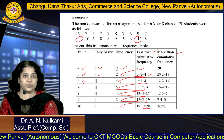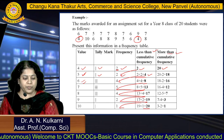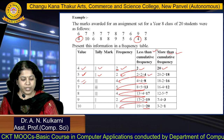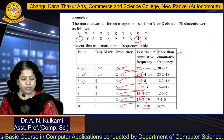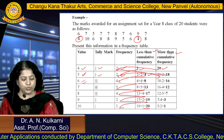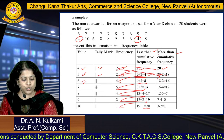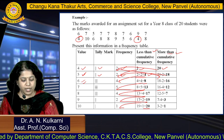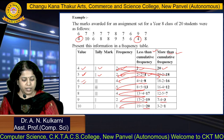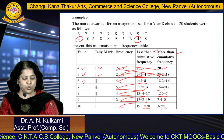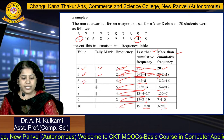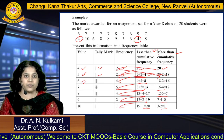For more than cumulative frequency, start by writing the total frequency of 20 for the first data item, then subtract successively from highest to lowest: 20 − 2 = 18; 18 − 2 = 16; 16 − 4 = 12; 12 − 5 = 7; 7 − 4 = 3; and 3 − 2 = 1. This gives the more than cumulative frequency for all data items.